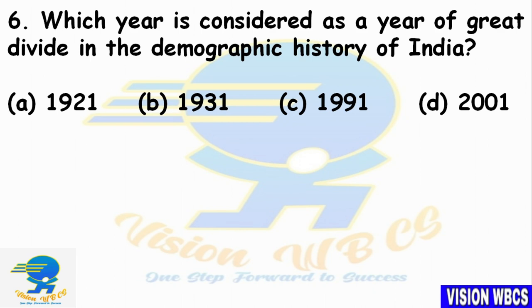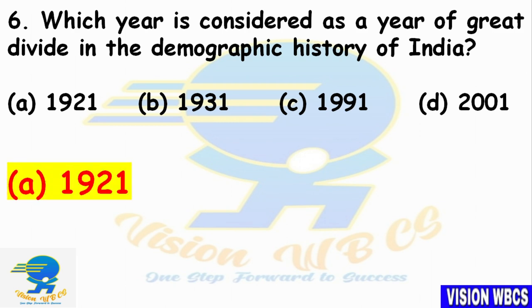Sixth question: Which year is considered the year of the Great Divide in the demographic history of India? Option A — 1921. Option B — 1931. Option C — 1991. Option D — 2001. The right answer is Option A: 1921.